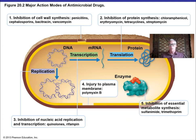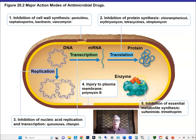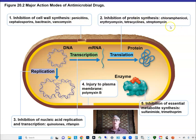Major antimicrobial drug actions summarized: inhibition of cell wall synthesis — penicillins, cephalosporins, bacitracin, and vancomycin; inhibition of protein synthesis — chloramphenicol, tetracyclines, streptomycin, and erythromycin; inhibition of metabolic synthesis — sulfonamides and trimethoprim, which block dihydrofolate metabolism; inhibition of nucleic acid synthesis — quinolones and fluoroquinolones like ciprofloxacin, and rifampin.